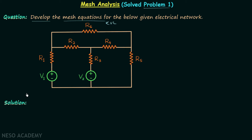Let's move on to the solution. In step number one we find out the total number of meshes. Looking at the network, there is one mesh here, a second mesh here, and the third mesh here. So in total there are three meshes.